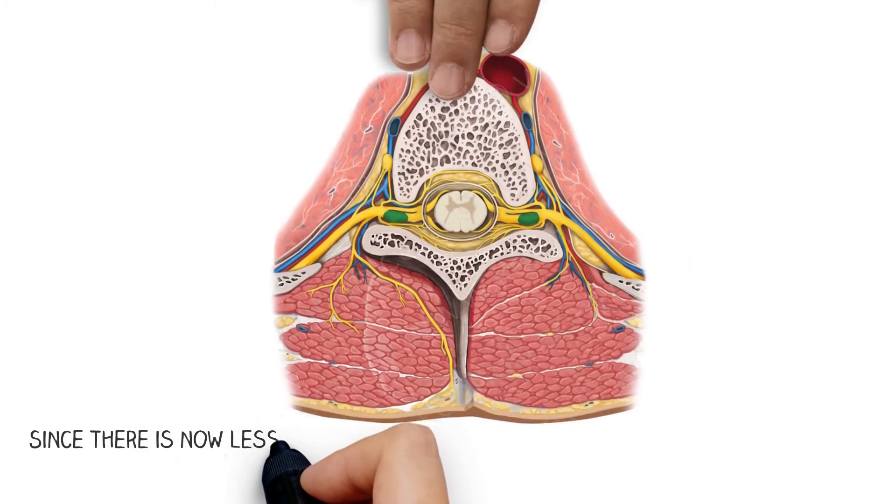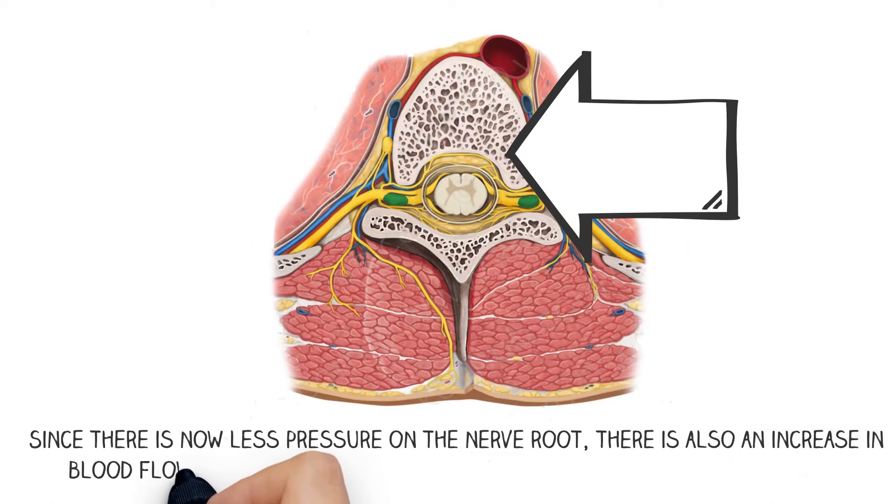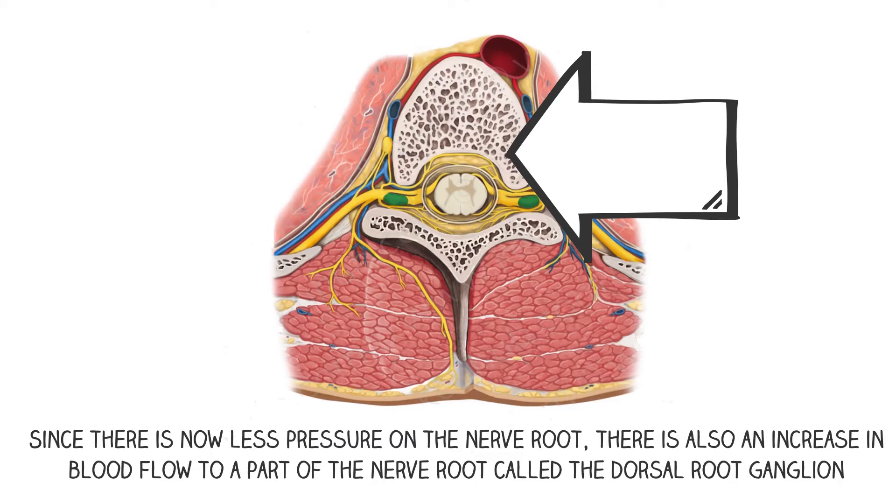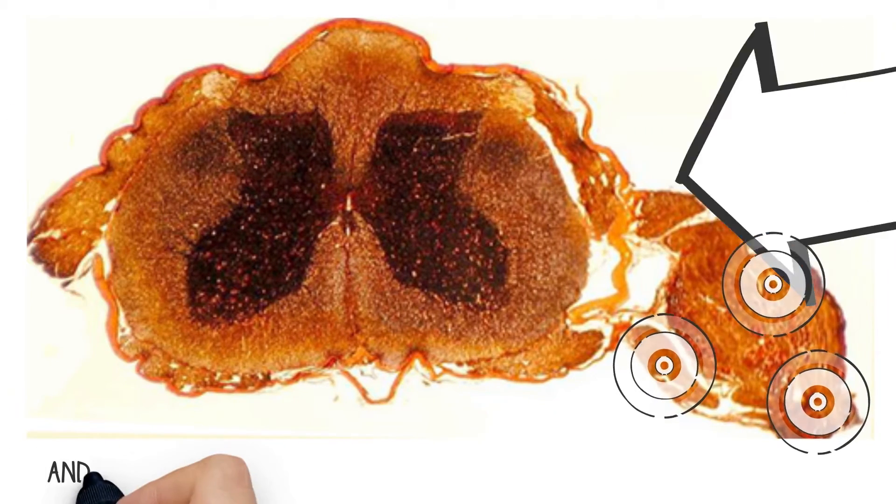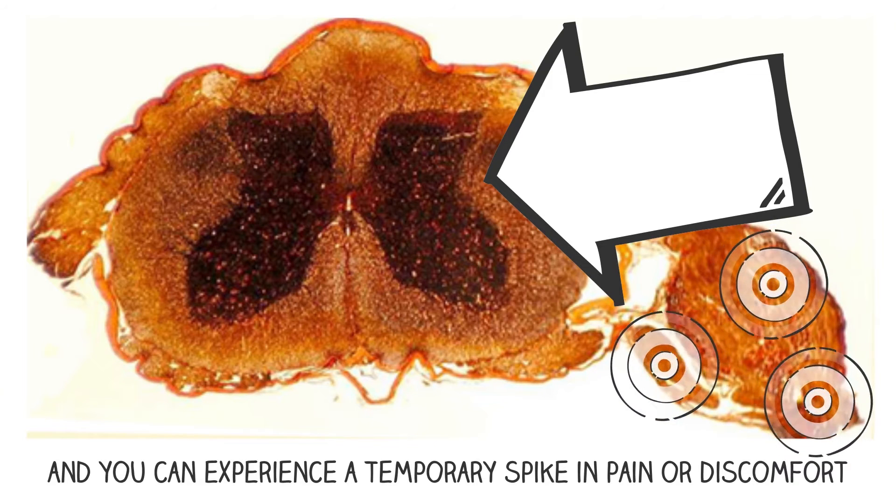Since there is now less pressure on the nerve root, there is also an increase in blood flow to a part of the nerve root called the dorsal root ganglion. The dorsal root ganglion can swell, and you can experience a temporary spike in pain or discomfort.